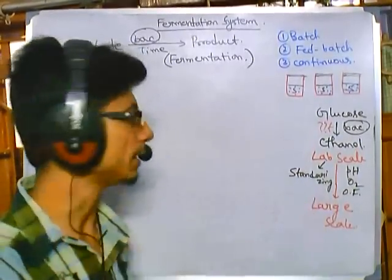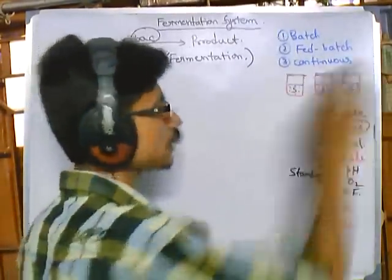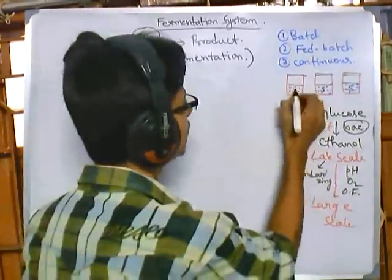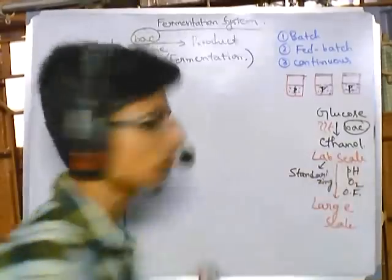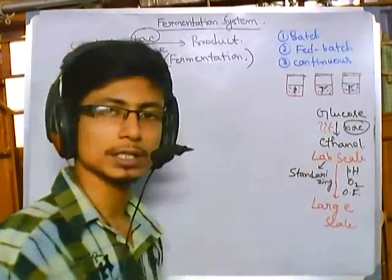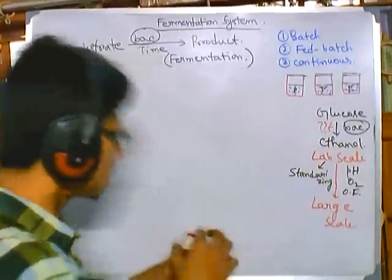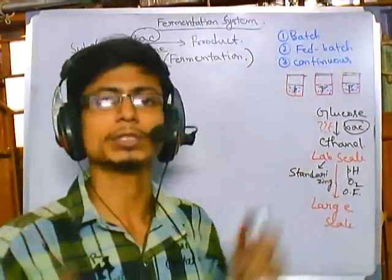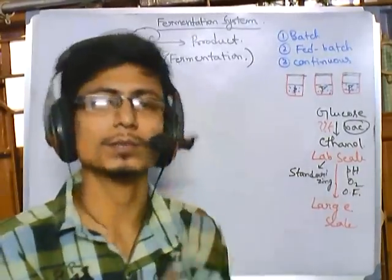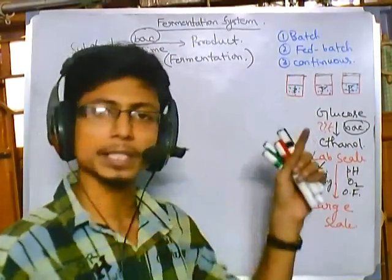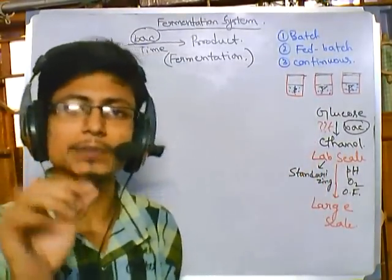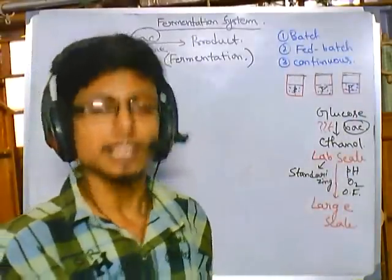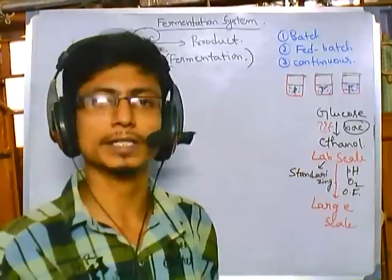In batch fermentation, we provide everything, wait for time T, and then get the product — every substrate is converted into product after that time, and we harvest it. In another process — fed-batch — we provide the substrate in a very small amount at the beginning along with bacterial inoculum, and as time proceeds, we add substrate in small drops, because the substrate can cause toxicity for the bacterial cell.